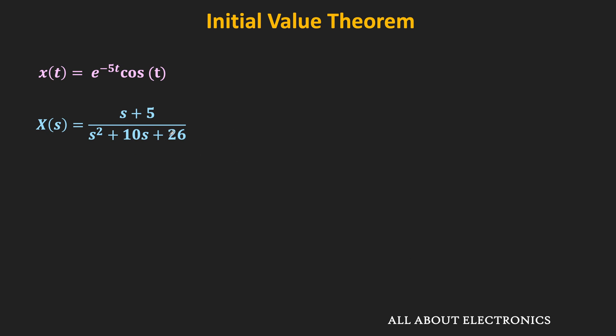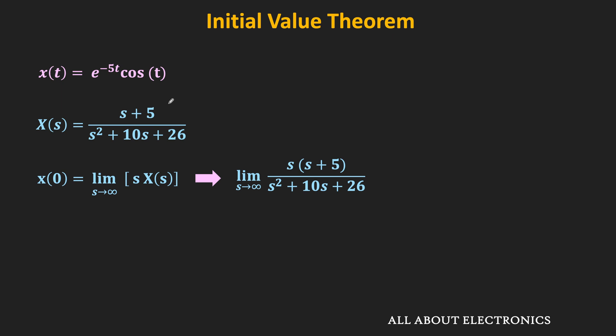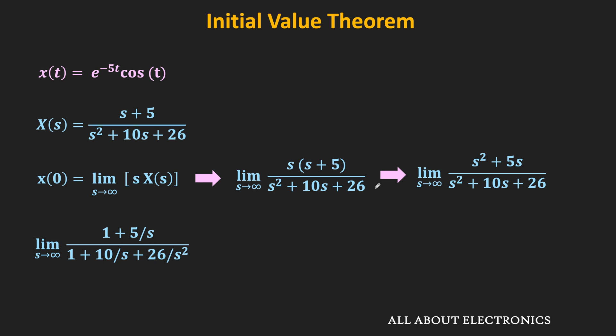Using the initial value theorem, let us find the value of this function at t = 0. As per the theorem, x(0) = limit s→∞ of s·X(s) = limit s→∞ of s·(s + 5)/(s² + 10s + 26). Multiplying s into the numerator gives (s² + 5s)/(s² + 10s + 26). Dividing numerator and denominator by s², we get limit s→∞ of (1 + 5/s)/(1 + 10/s + 26/s²). As s→∞, all terms with s in the denominator go to 0, so the value becomes 1.